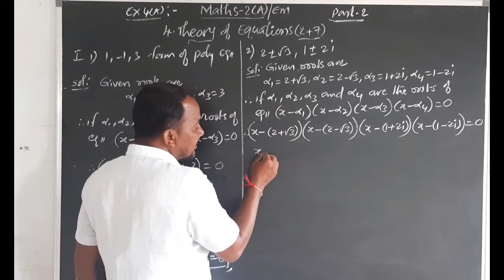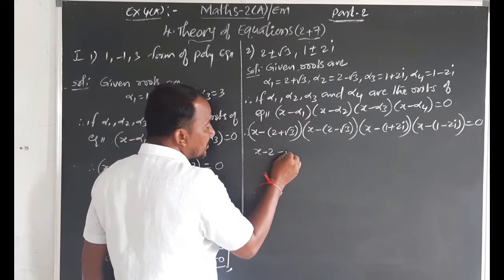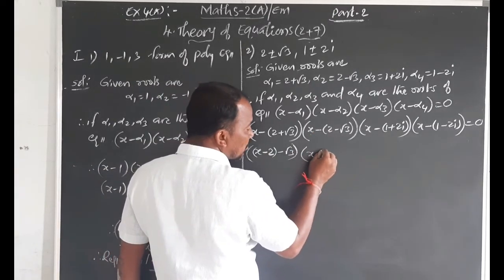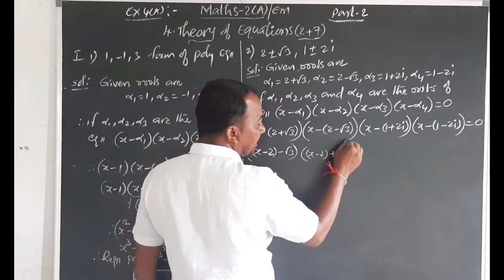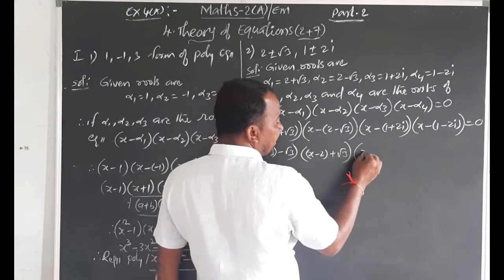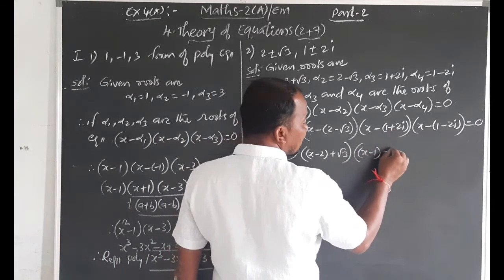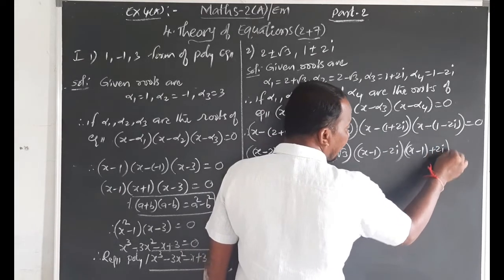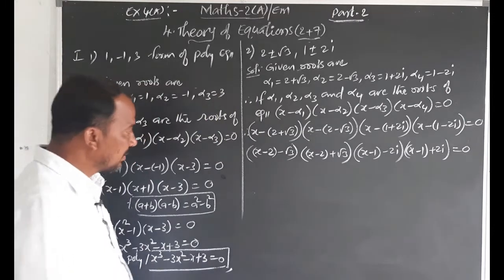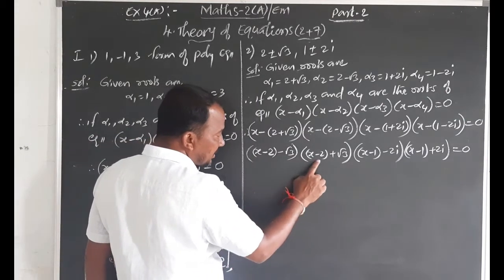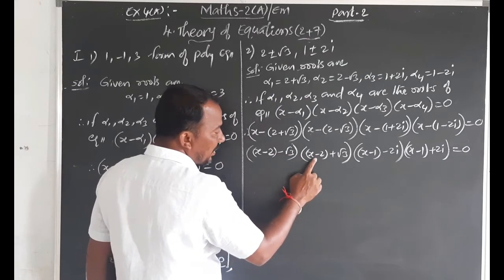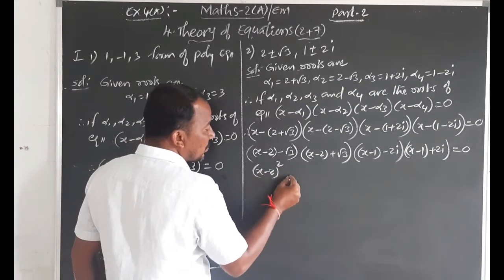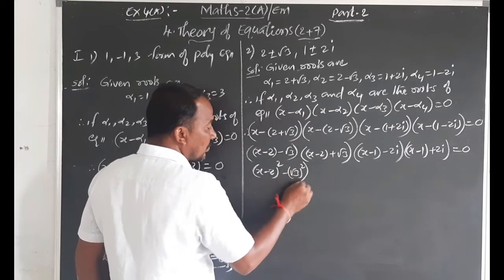Separate the real and complex pairs. For the real pair, apply (A - B)(A + B) = A² - B²: (x - 2 - √3)(x - 2 + √3) = (x - 2)² - (√3)² = x² - 4x + 4 - 3 = x² - 4x + 1. Similarly group the complex pair.